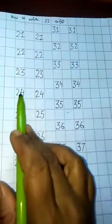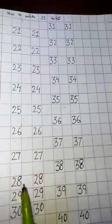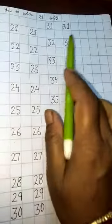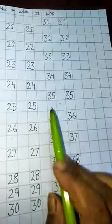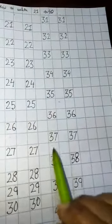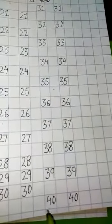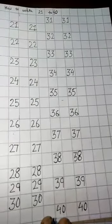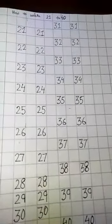So this is the process to write the counting numbers from 21 to 40. Practice at home. Bye, and thank you.